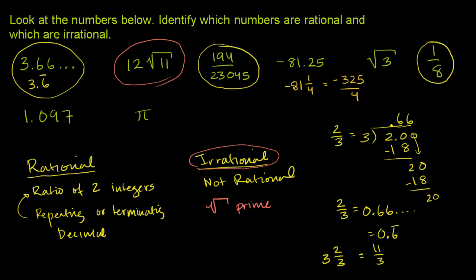If that confused you that I multiplied and then had a negative 1, remember this negative applies to everything here. It's negative 81 plus negative 1 fourth. Or you could think, how would I convert 81 and 1 fourth? 4 times 81 is 324 plus 1 is 325.